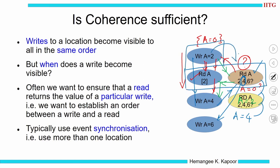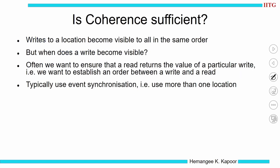So if I want to enforce that read a returns the value 4 — that is, I want to establish an order where this write should happen before this read — I would need to establish event synchronization across them. Event synchronization is needed when I want a read to return a value of a particular write, and this cannot be done using coherence.